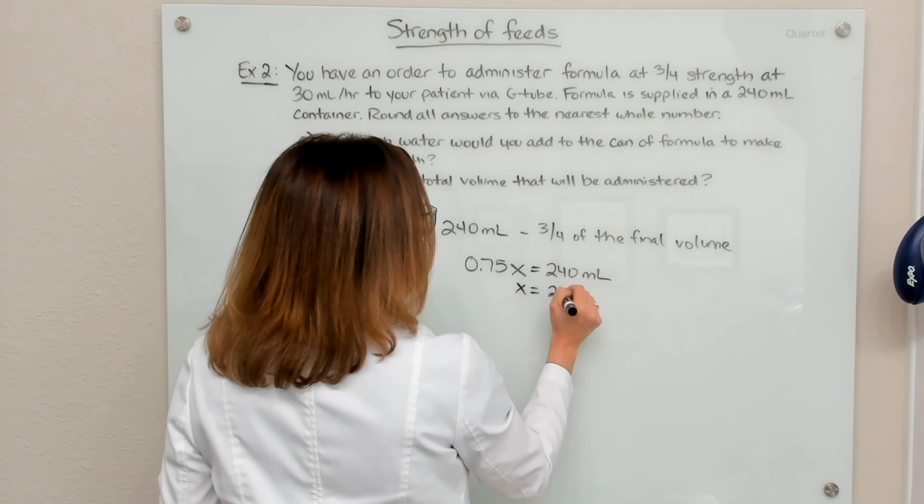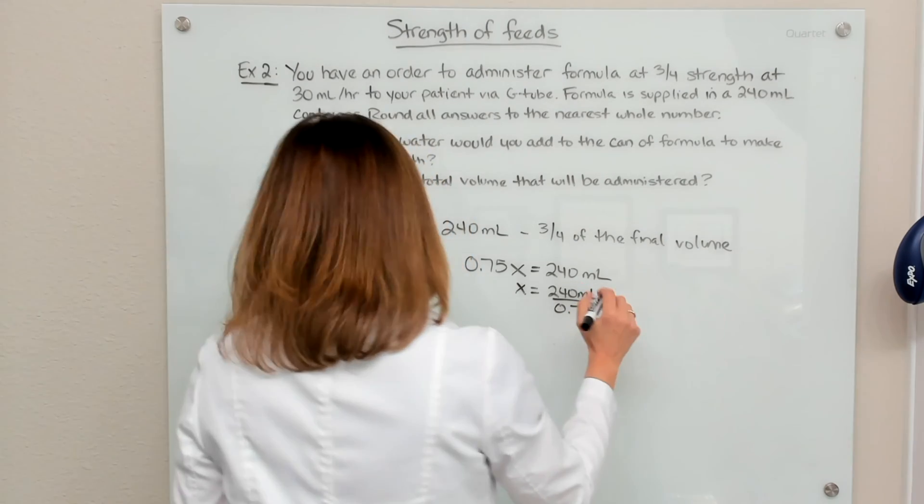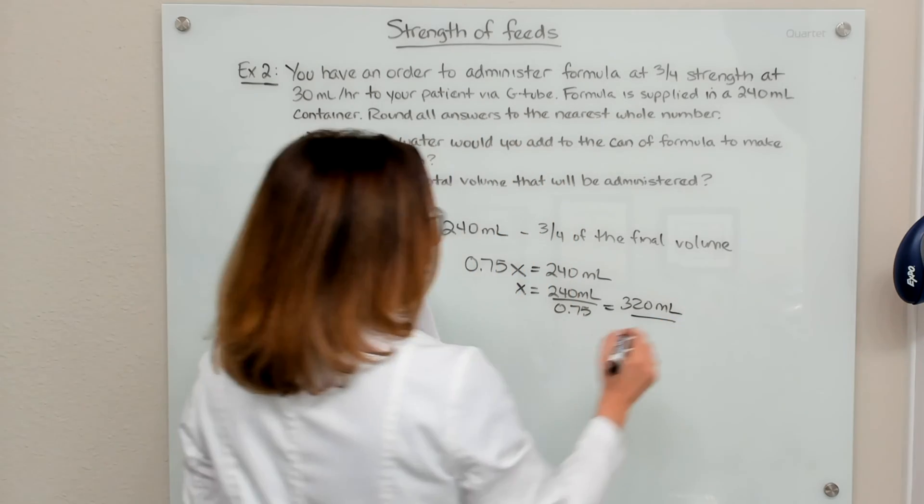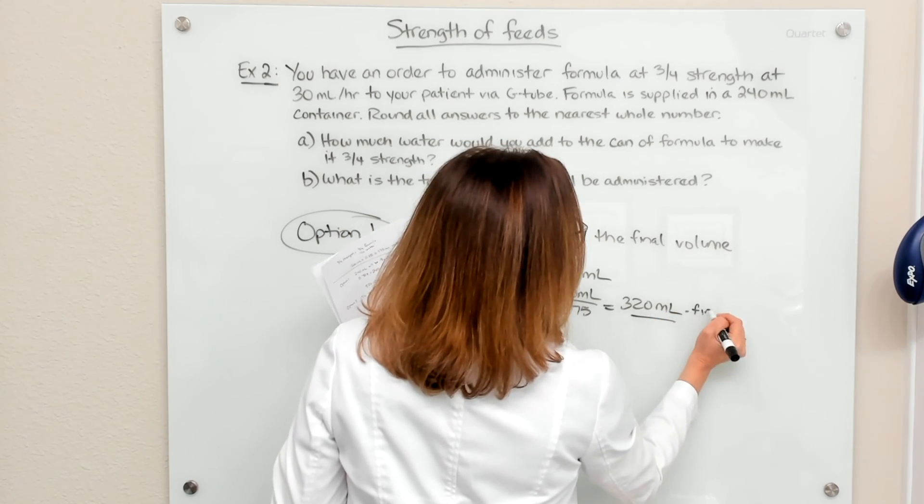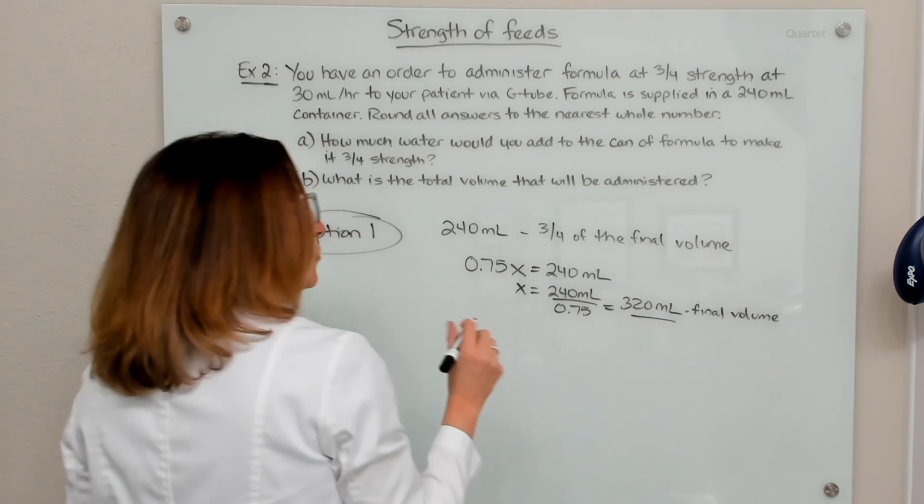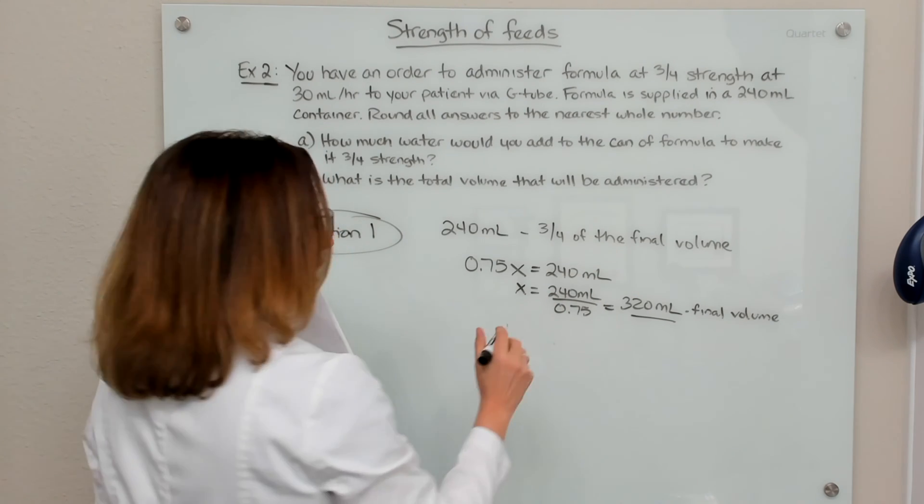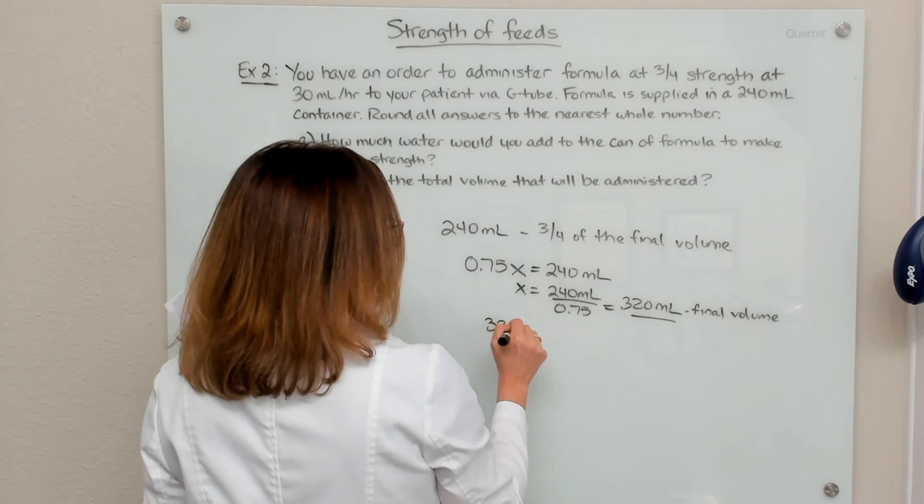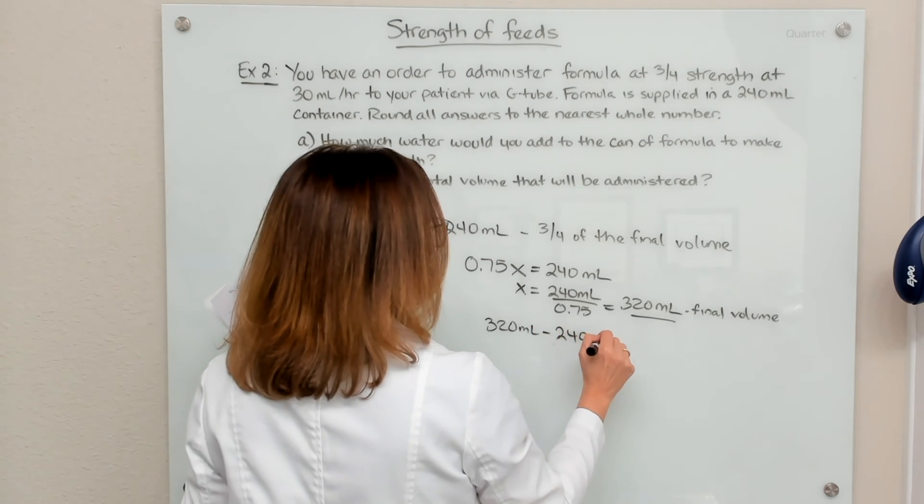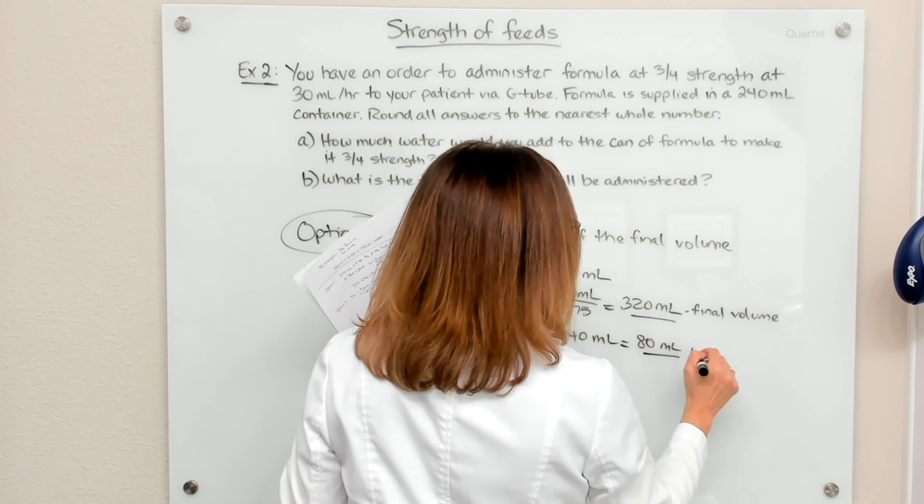So x equals 240 ml divided by 0.75. If we do this math, we end up with 320 ml. So 320 ml is the final volume after we add the water. So to figure out how much water is in that 320 ml, I would take that 320 ml, subtract out my formula volume, which is 240 ml, and I end up with 80 ml of water.